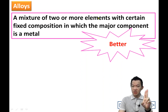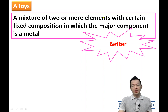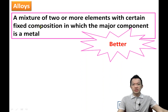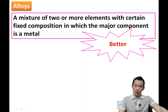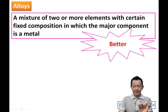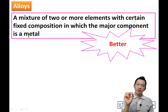A mixture of two or more elements — they are physically mixed (混合), not chemically combined. They mix with certain fixed compositions. The major component inside is a metal. So that is the formal chemistry definition of an alloy.